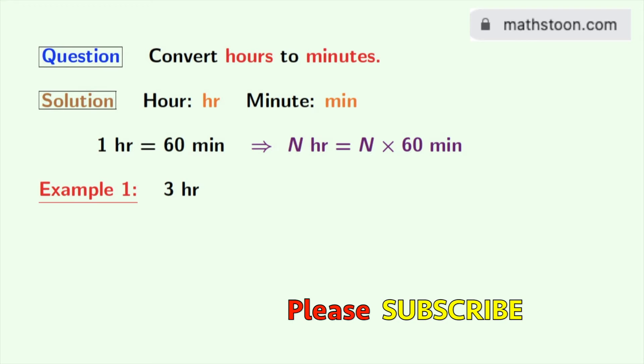Our first example is 3 hours. Using this fact, we can write 3 hours as 3 times 60 minutes, which is equal to 180 minutes.